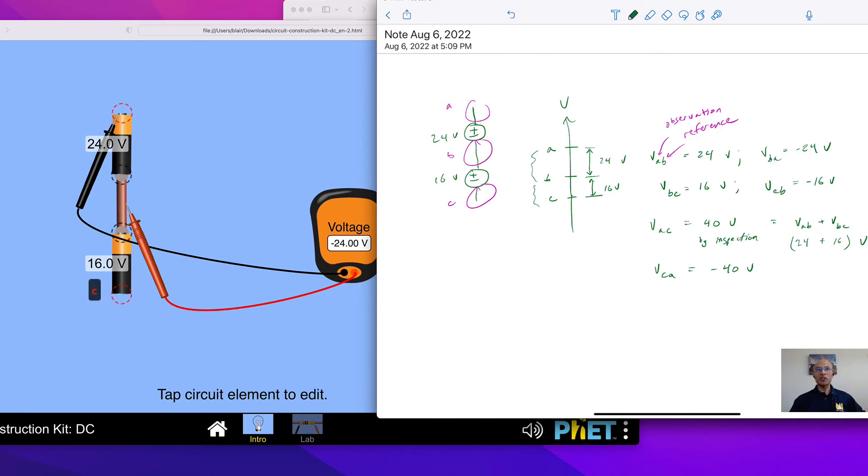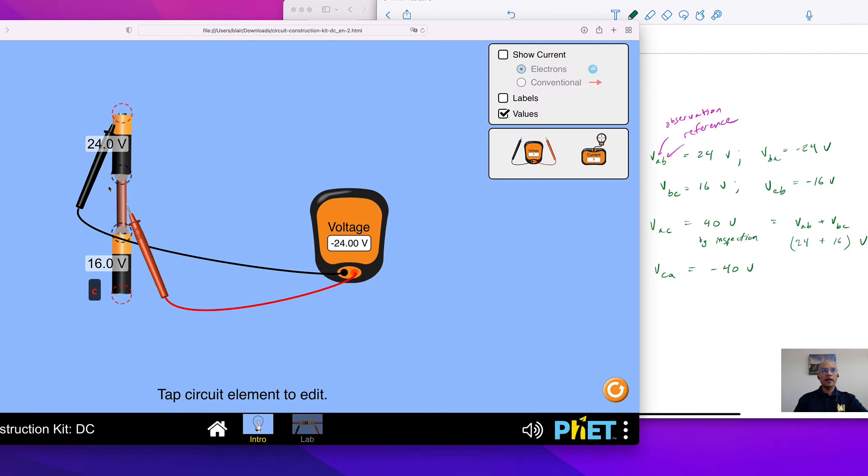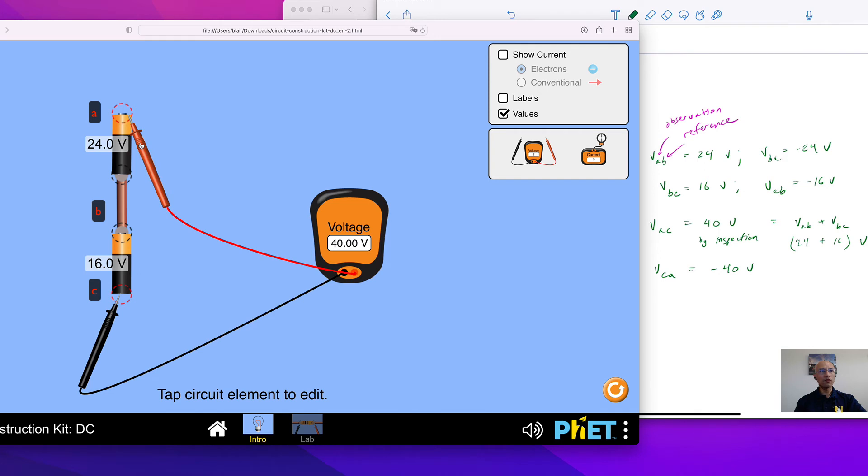Because of the work we did above. And so let's just double check that. We can go back here. And let's double check, here's VBC, which we wrote as 16. And then VCB, negative 16. And then VCA means that A is the reference and C is the observation point, so it's negative 40, just like we wrote over there. And then VAC, 40 volts.